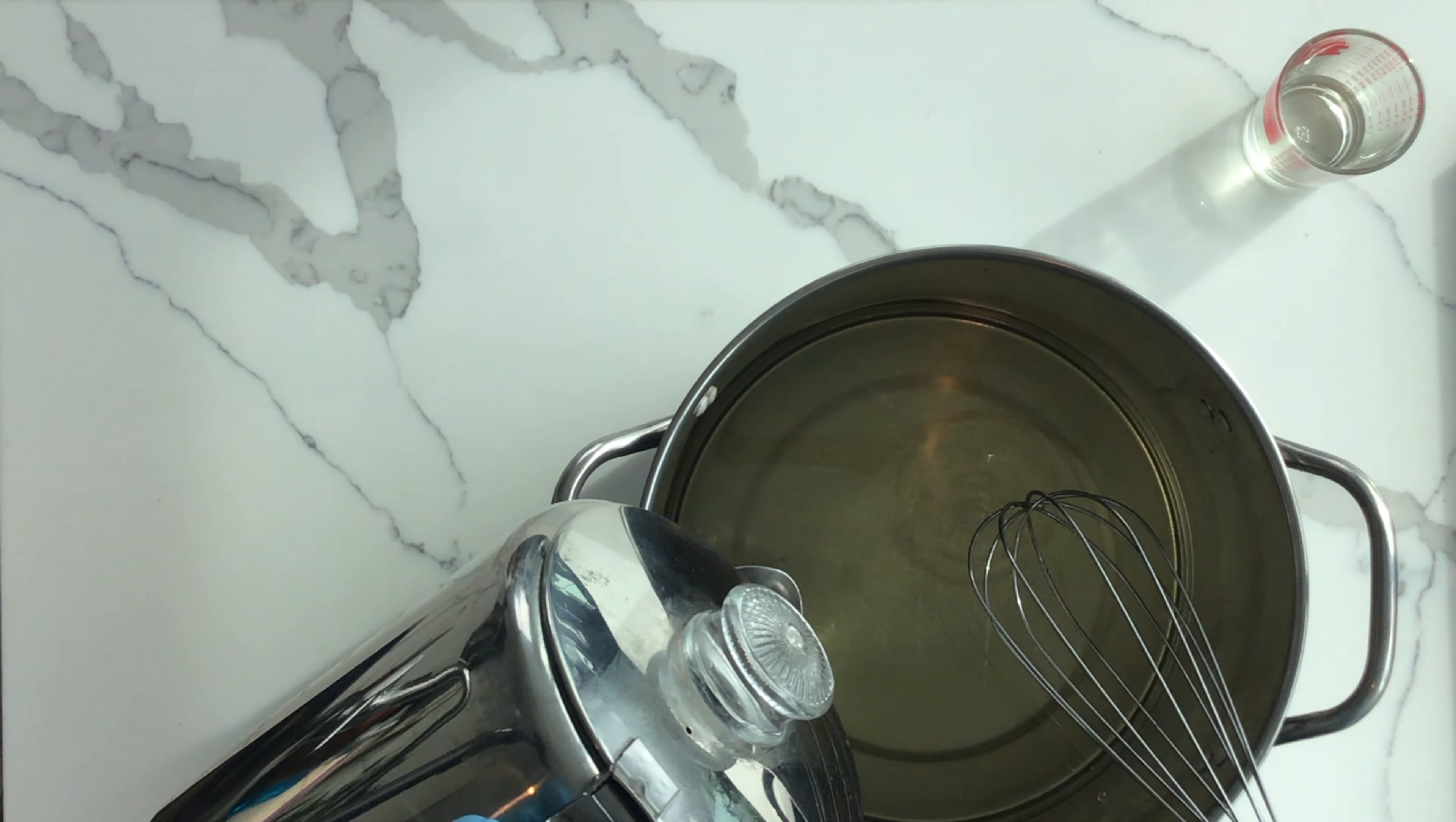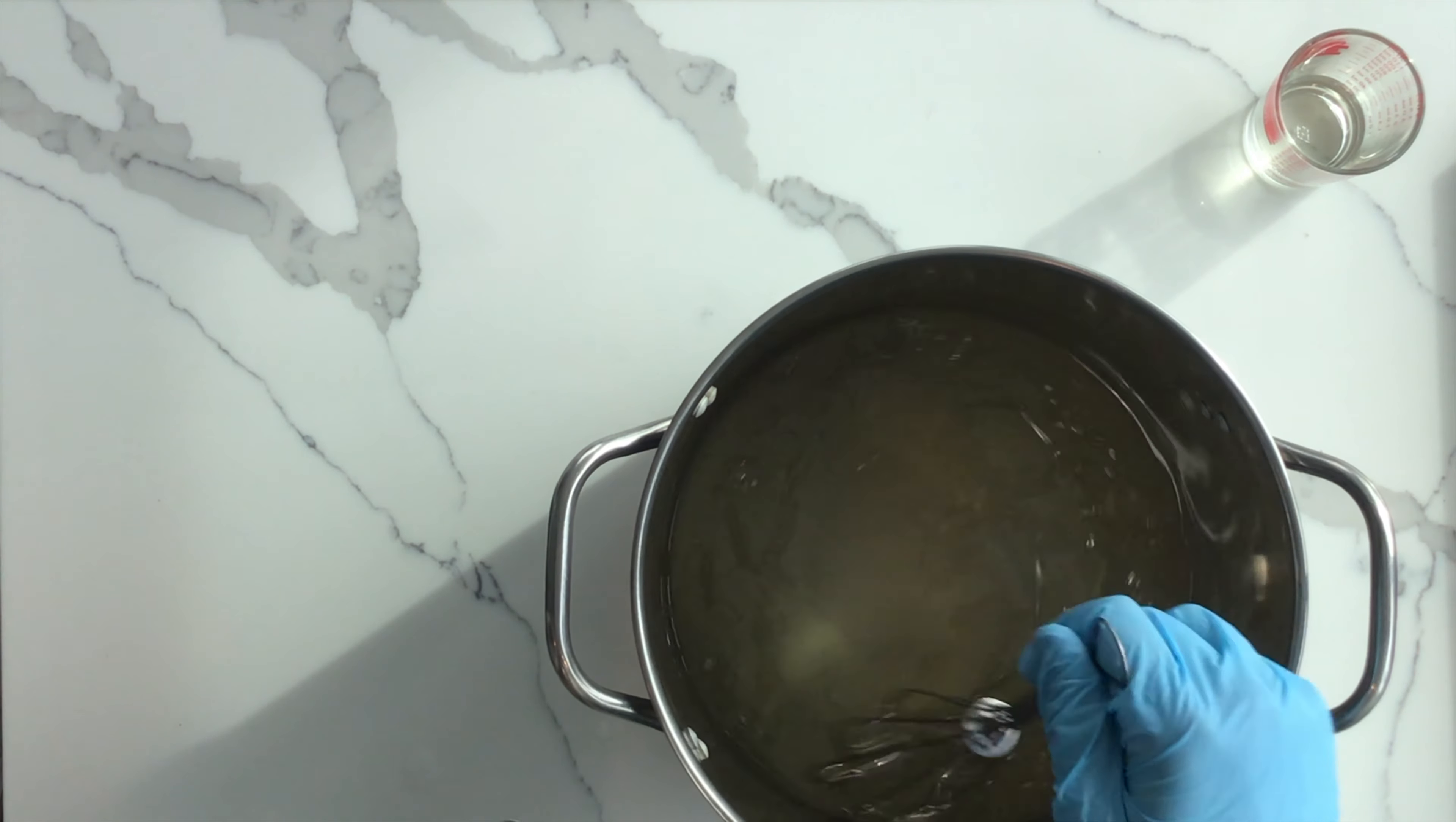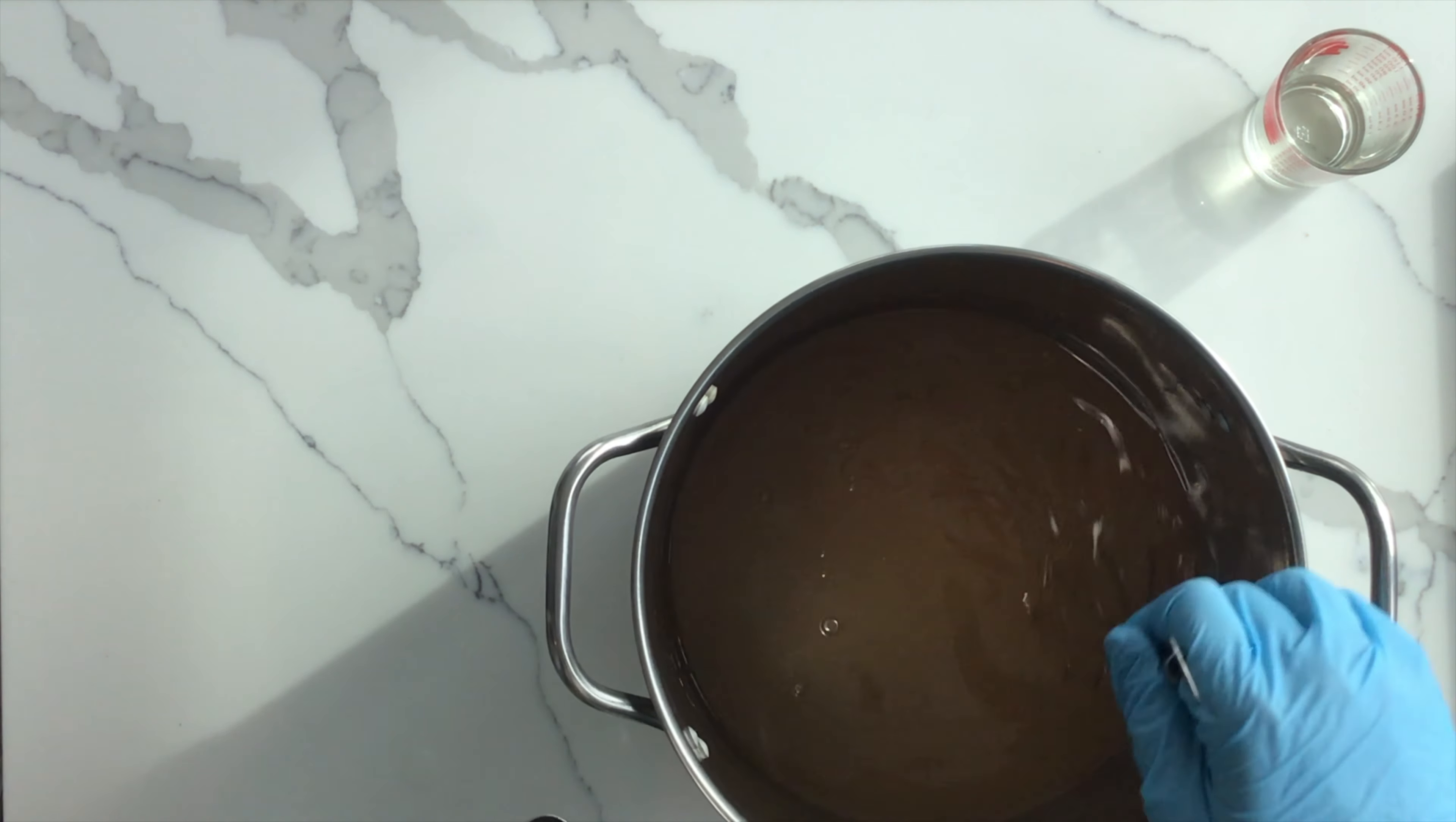Now get your steel whisk ready. Slowly add the lye solution to the oil and not the other way around. Pour a bit at a time and stir. This will take some time, but just keep stirring slowly making sure not to splash. You'll notice the color of the oil is changing. This is called emulsification and you are witnessing the chemical reaction between the lye and the oil.